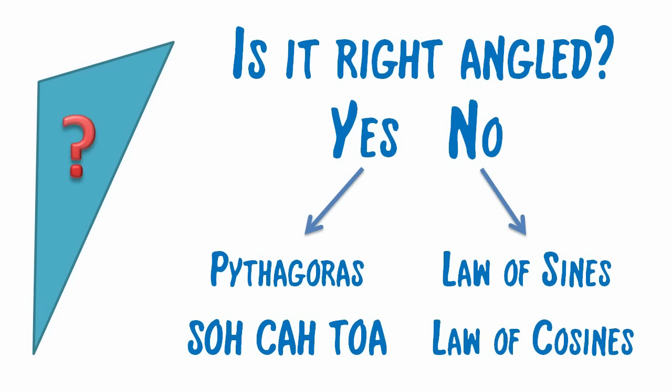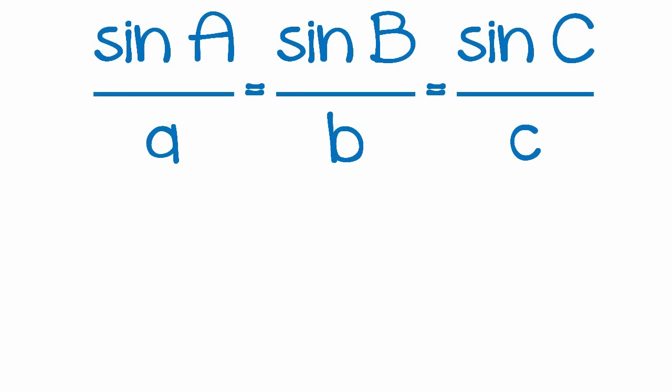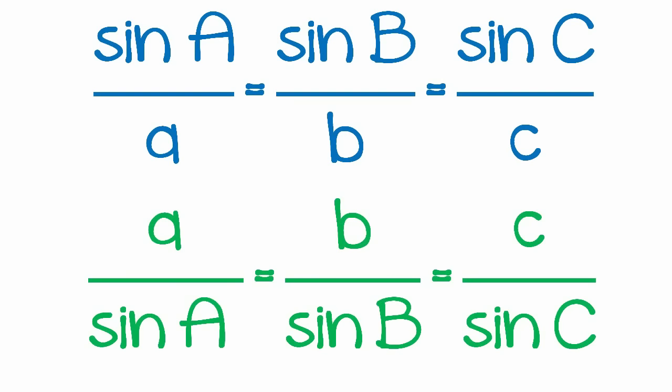If it's not a right angled triangle, then you might use the law of sines, also known as the sine rule, or the law of cosines, also known as the cosine rule. The law of sines can be written as sin A over a equals sin B over b equals sin C over c. Or you can flip those over if it suits you to do so, and you can write it as a over sin A equals b over sin B equals c over sin C.